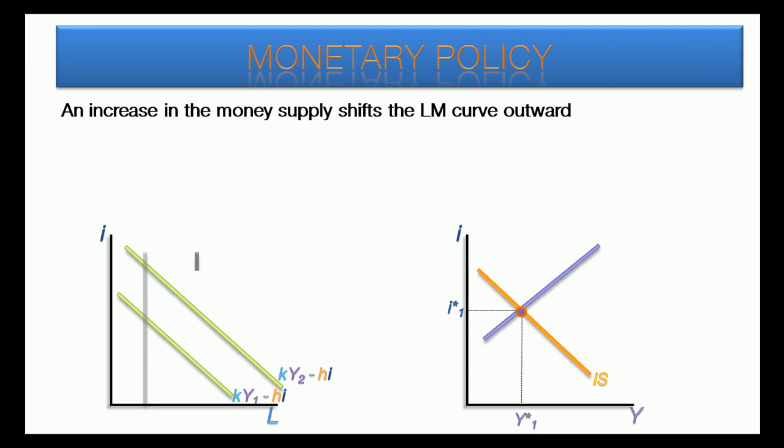When the central bank increases the money supply to M2, the LM curve shifts down. The immediate result is that the interest rate drops from its original position to the intersection of Y1 and the lower LM curve.